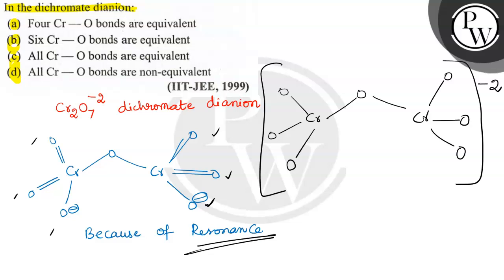Because of the resonance, how many Cr-O bonds are equivalent? Here only double bonded oxygen: this one, one, two, three, four, five, and six.